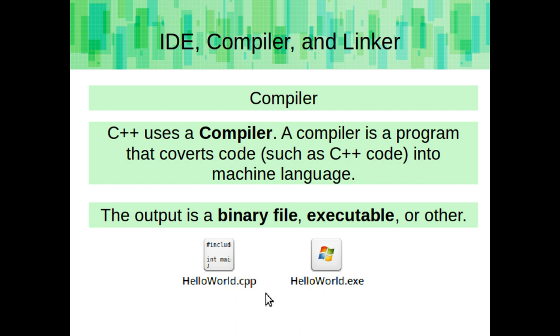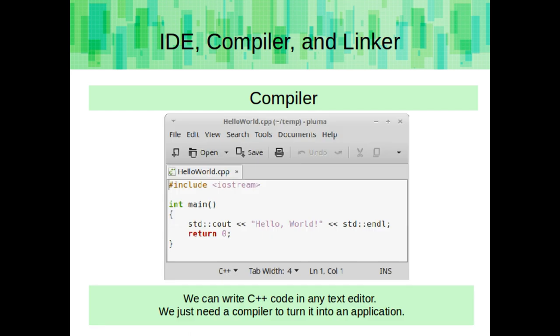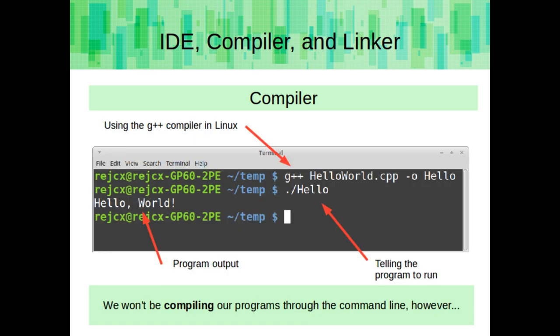C++ uses a compiler. A compiler is a program that converts code, such as C++ code, into machine language. The output is a binary file, executable, library, or other. We can write C++ code in any text editor, we just need a compiler to turn it into an application. I've used the G++ compiler to compile my Hello World source code into a program. We won't be using the command line to compile our programs in this class, but it is important to know that the compiler is part of our development environment.